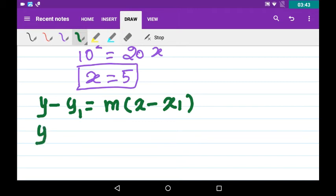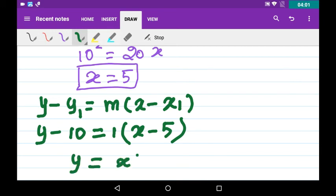That is y - y₁ = y - 10, and m is 1, times x - x₁, which is 5. What you get is y = x + 5. Okay.